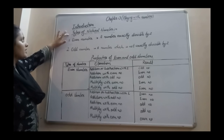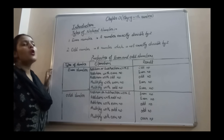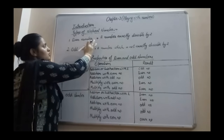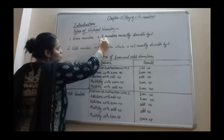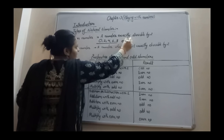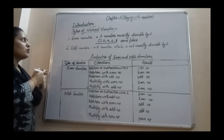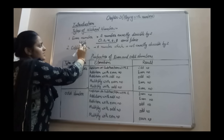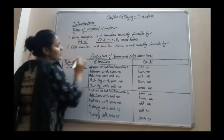After factors and multiples, the next topic is types of natural numbers. The first is even numbers. An even number means a number exactly divisible by 2, or we can say a multiple of 2. For identifying even numbers, remember: if a number contains 0, 2, 4, 6, or 8 at its ones place, that number is called an even number. For example, 416 has 6 at the ones place, so 416 is an even number.